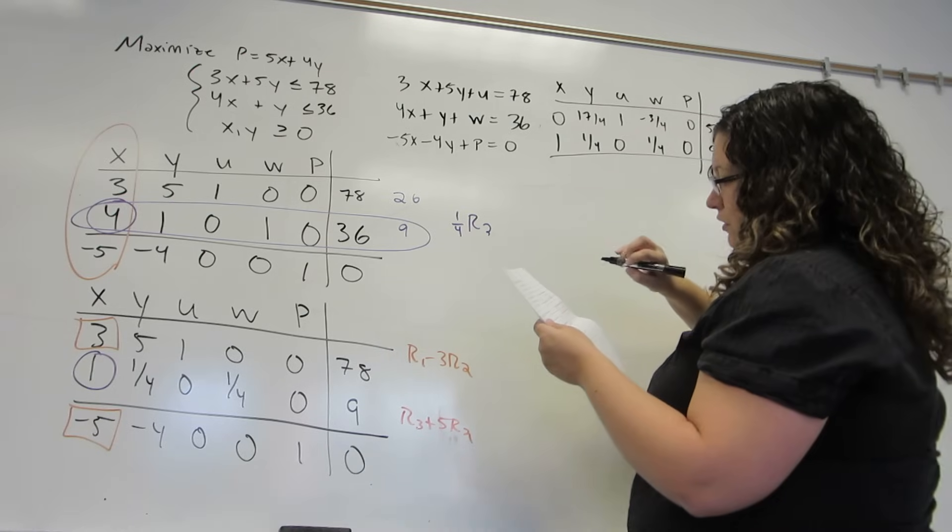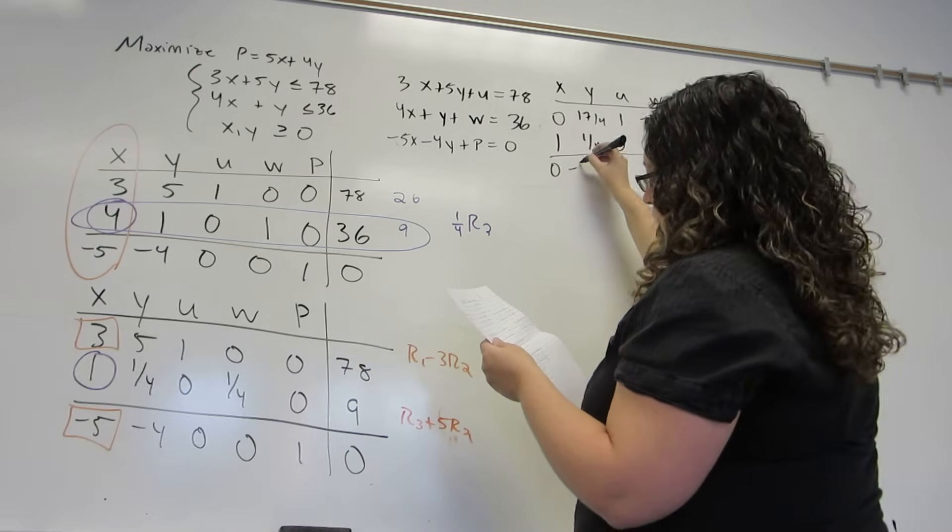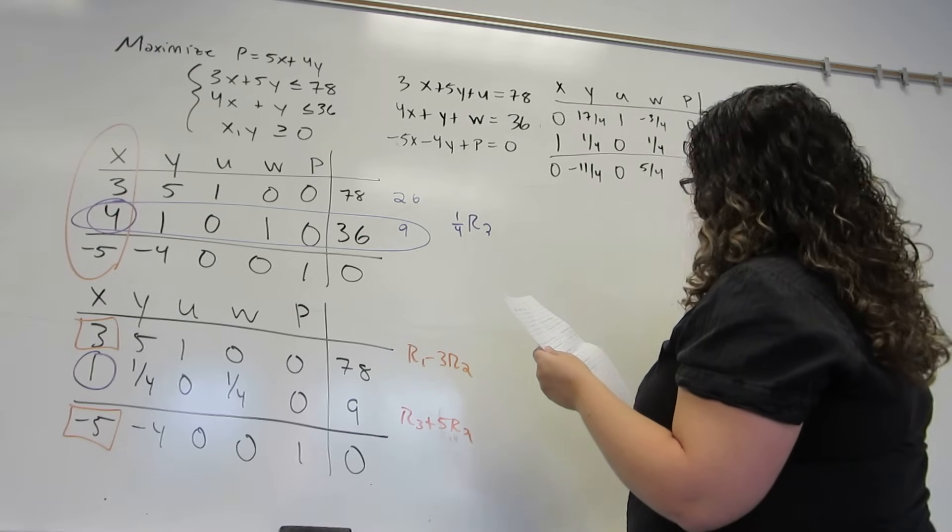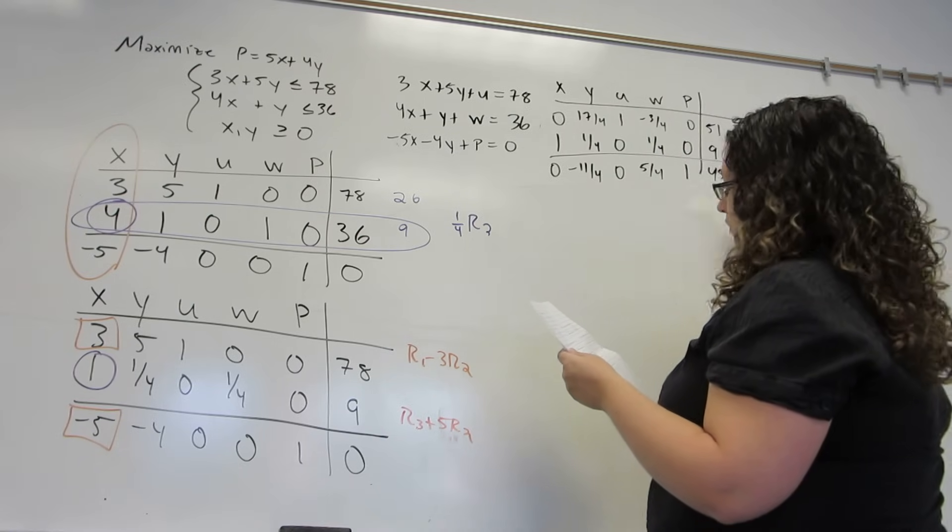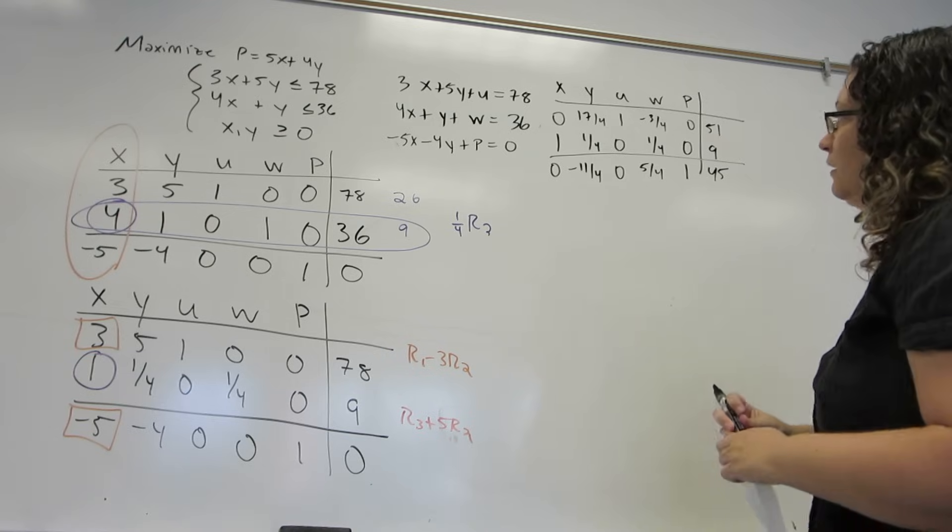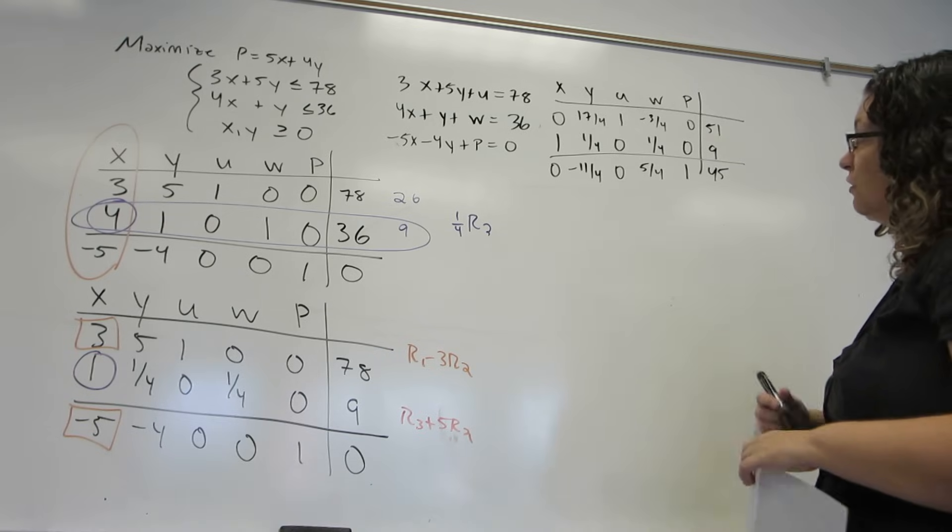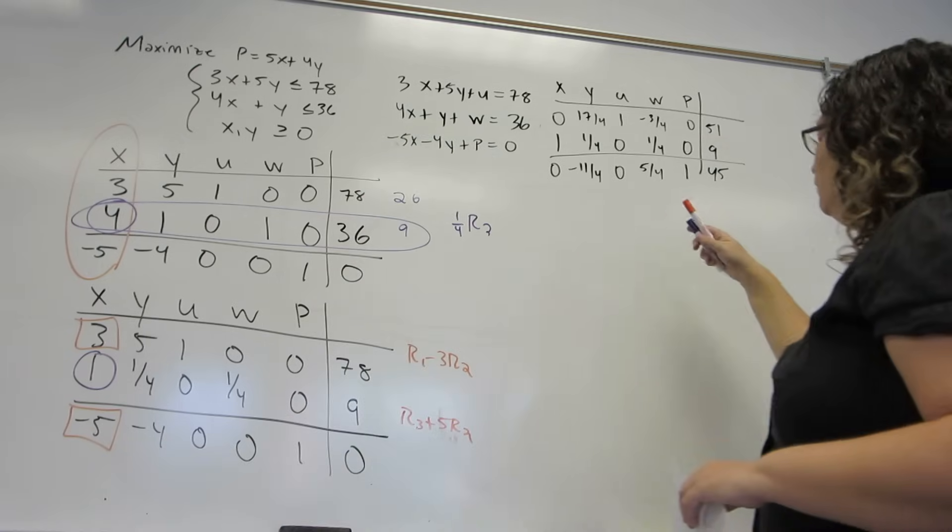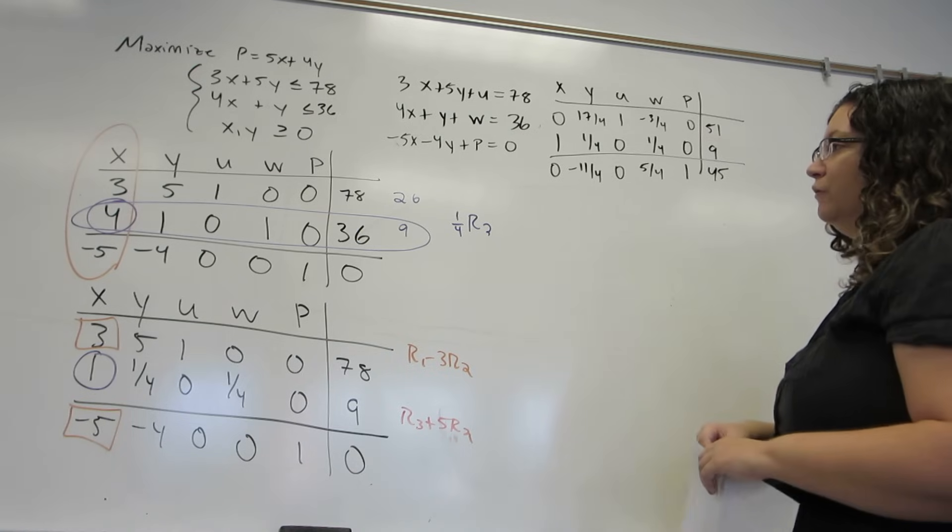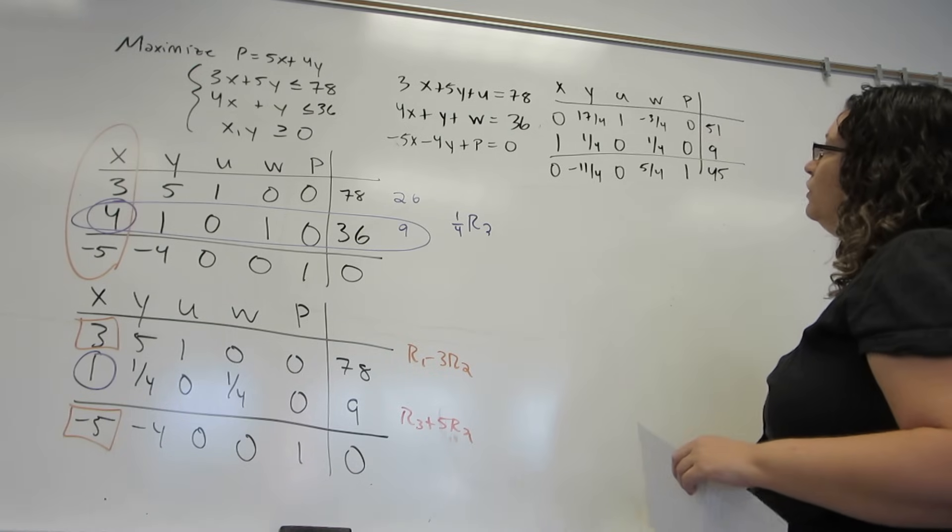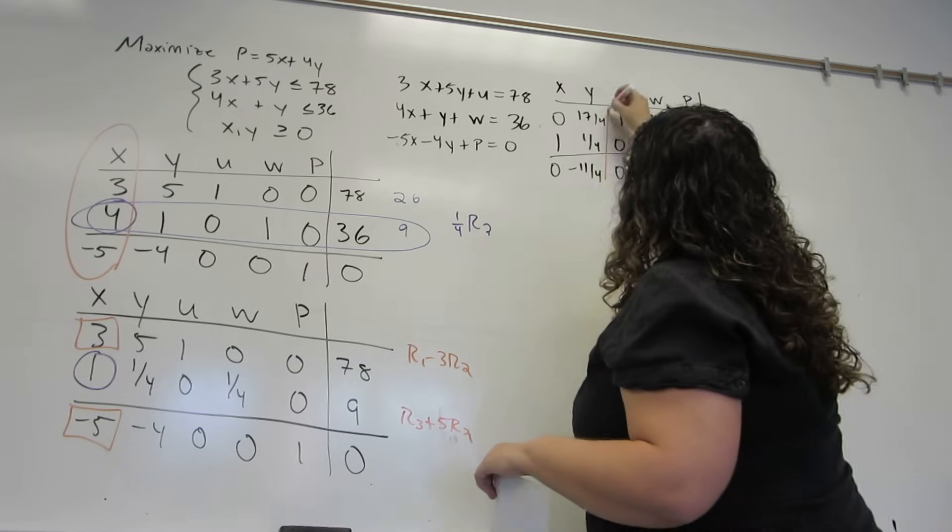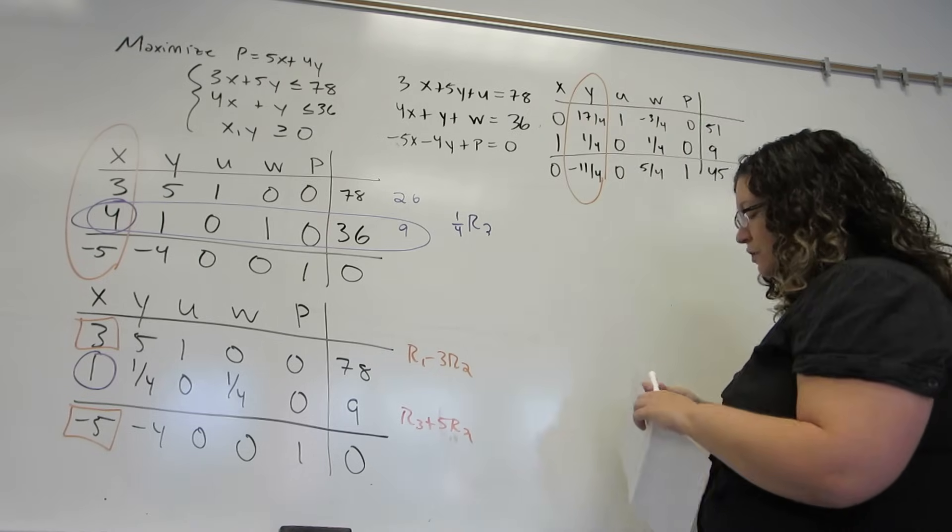And the last row will become 0, minus 11 fourths, 0, 5 fourths, 1, 45. Now, it may take a while to actually do those calculations with the fractions. But when we get to this part, we now repeat over again. And I say, which column on the bottom has the most negative number? Well, there's only one negative number left, so it will be that column.